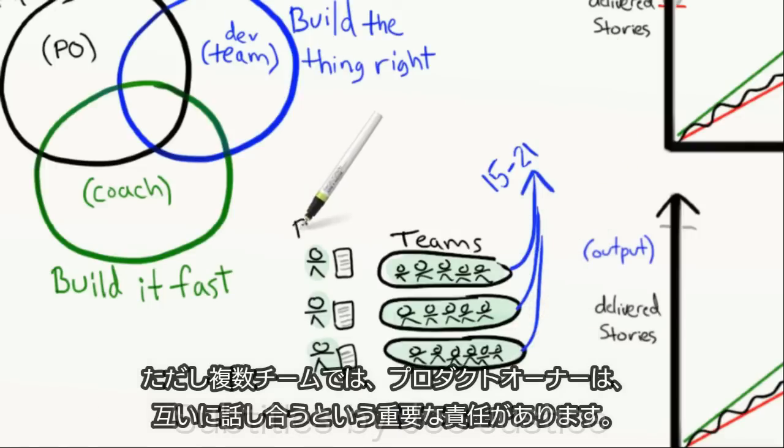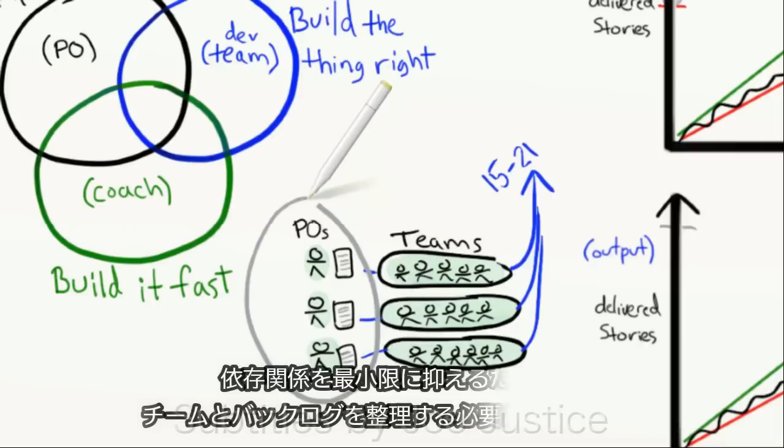In a multiple team scenario, however, the product owners have an important additional responsibility to talk to each other. We should organize the teams and backlogs to minimize dependencies, but there will always be some dependencies that we just can't get rid of.